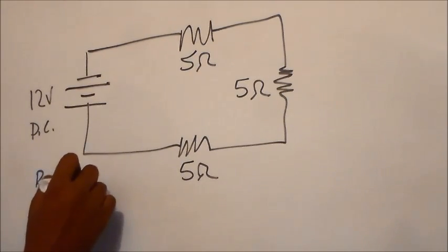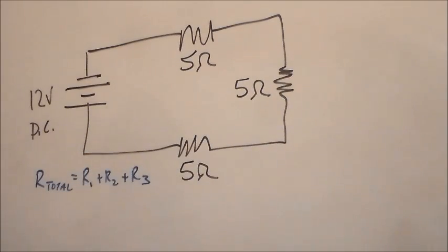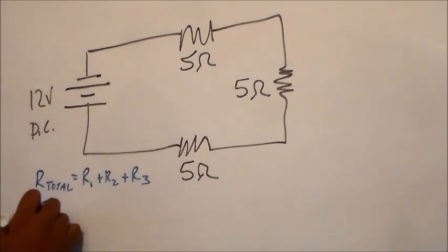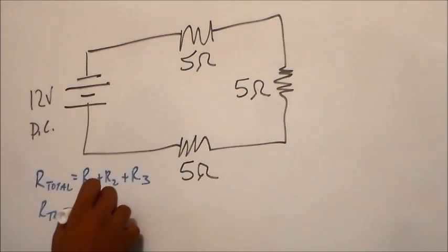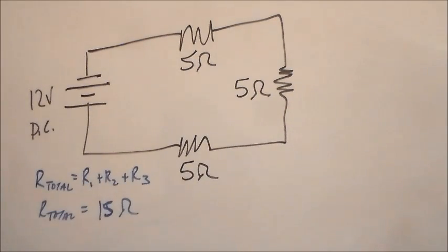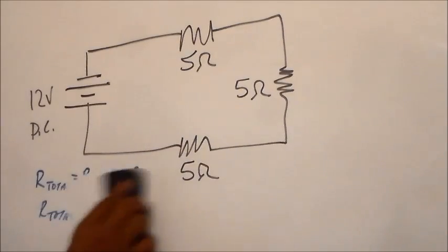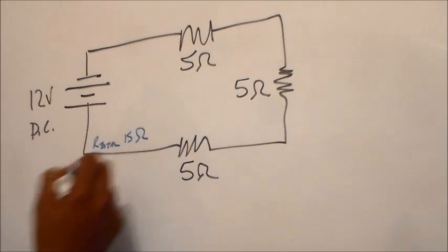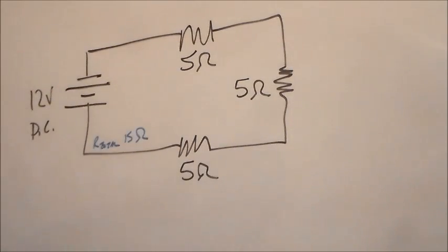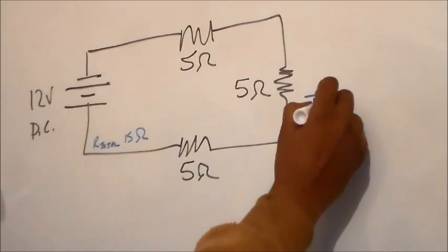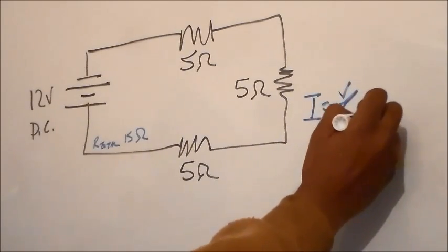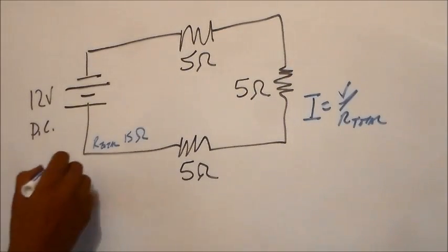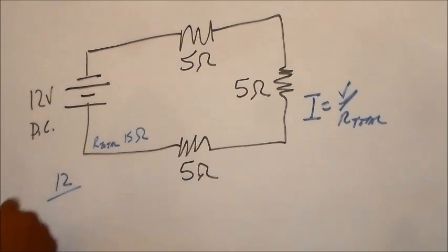In a series circuit, the total resistance equals R1 plus R2 plus R3. So total resistance is 5 plus 5 plus 5, which is 15 ohms. Now I want to find the current. Current equals voltage over total resistance. Voltage is 12 and our total resistance is 15.